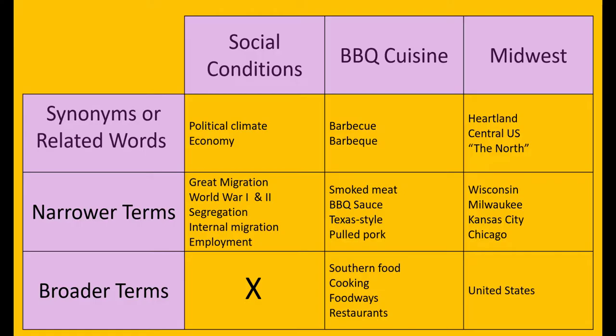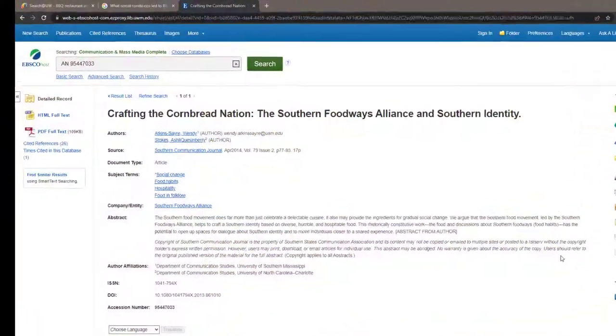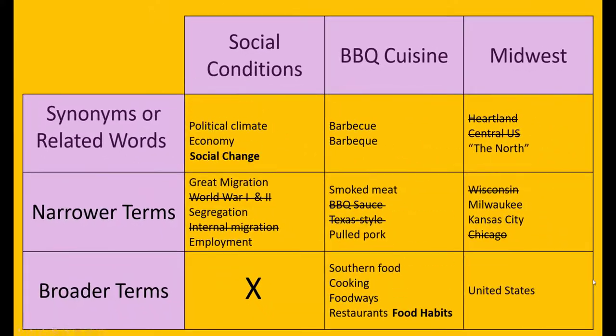It's useful to keep track of your keywords throughout the research process. As you search, note any terms that don't work. And as you research and read, you'll encounter new terms related to your topic. Add these to your brainstorm chart for future searches.